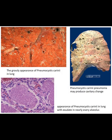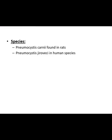Because Pneumocystis occurs in the lung, it causes changes in the lung, including cavitation. Pneumocystis carinii pneumonia — carinii is the animal species, found rarely, while jirovecii is the human species.